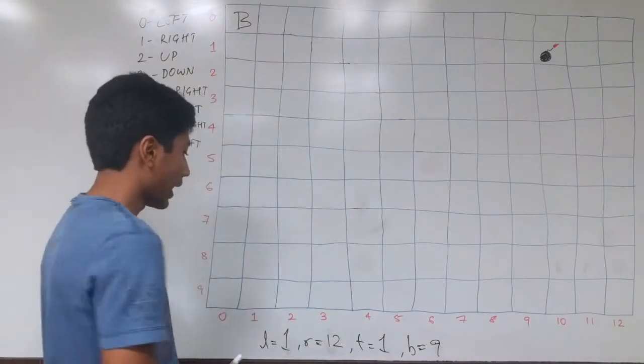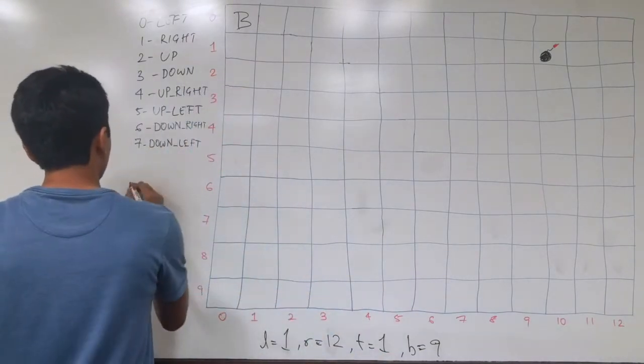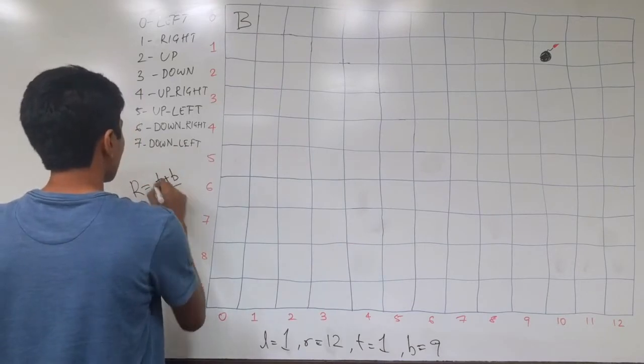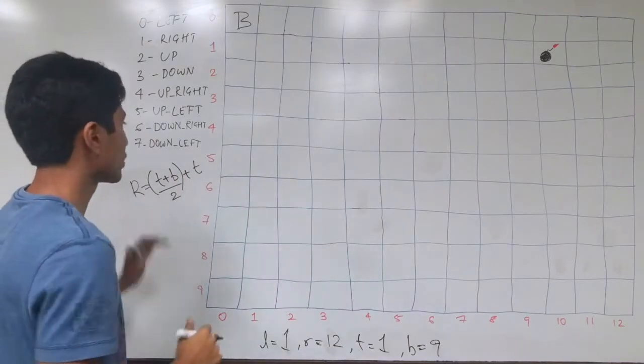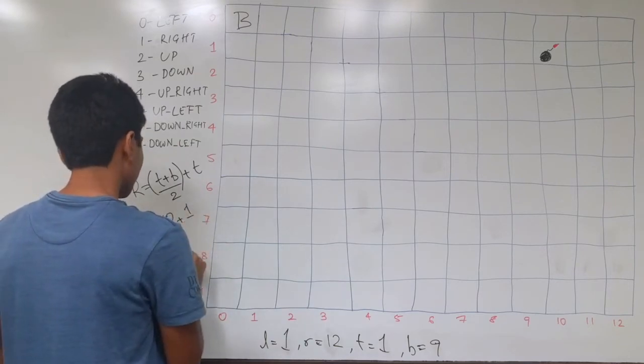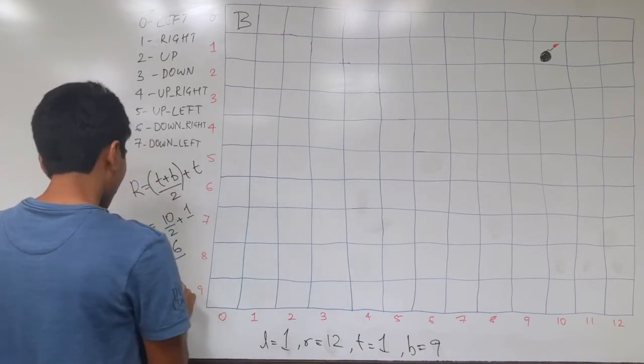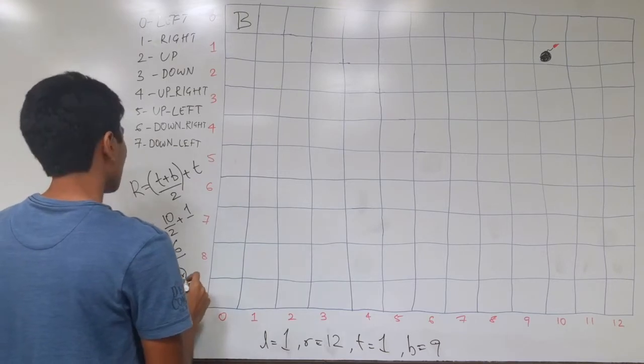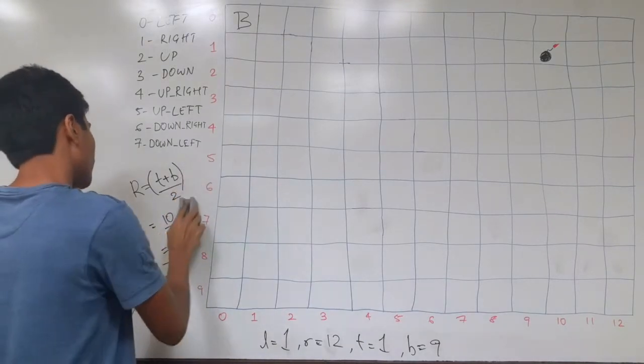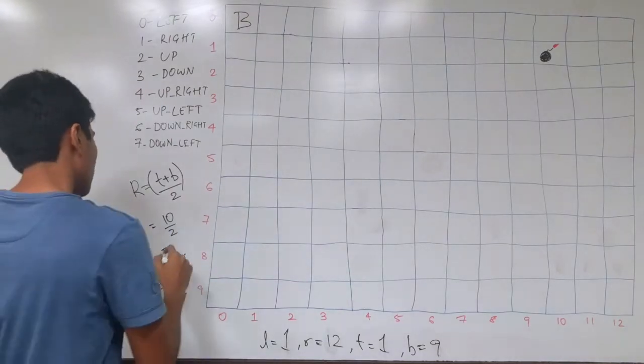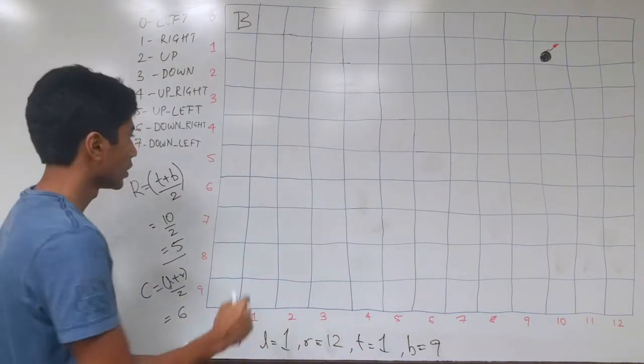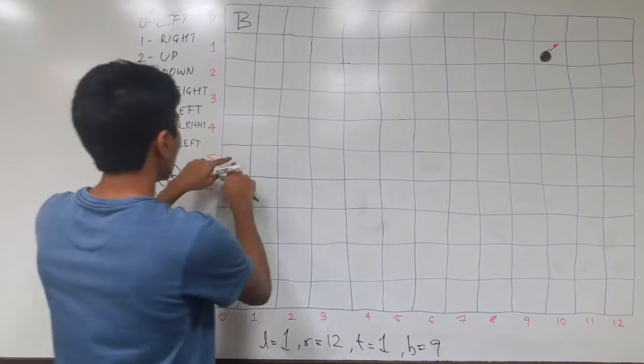If this column had the bomb then you would have got a direct indication of down. Instead you got down-right. So left should increment itself to 1, and top should also increment itself to 1. This is the playing area you have now and you want to go to the center of it. So we are going to be taking the row as T plus B by 2. This is the equation we have and that comes out to be 1 plus 9 which is 10 by 2, which is 6. This is the row number, and column number similarly is L plus R by 2, which gives you 6 in each division. So we get column number as 6 and row number as 5.